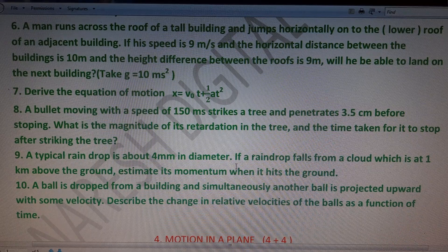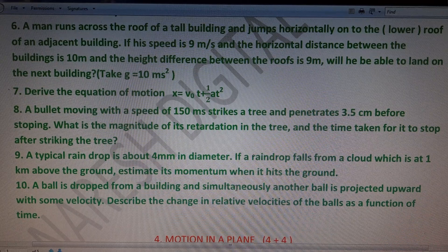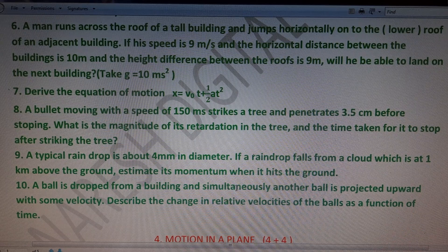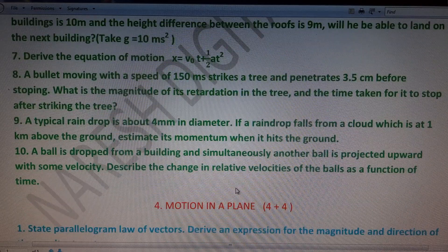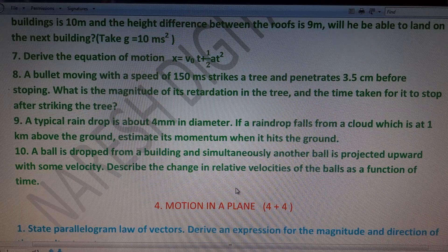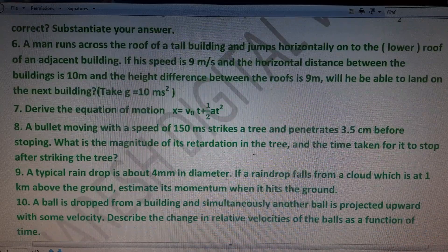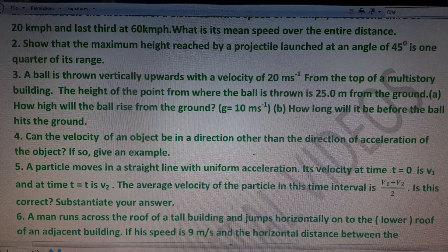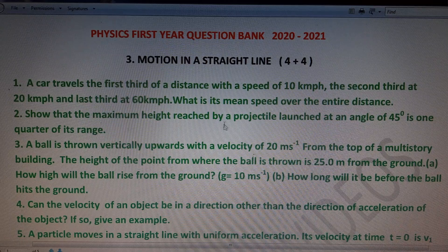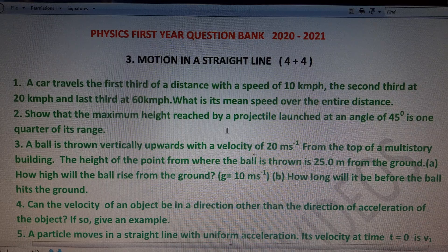Ninth problem: a typical raindrop is about 4 mm in diameter; if it falls from a cloud 1 km above the ground, estimate its momentum when it hits the ground. Tenth problem: a ball is dropped from a building while simultaneously another ball is projected upward — describe the change in relative velocities as a function of time. From these 10 questions, two four-mark questions will be asked in the IPE examination. The total weightage of this chapter is 4 + 4 = 8 marks.